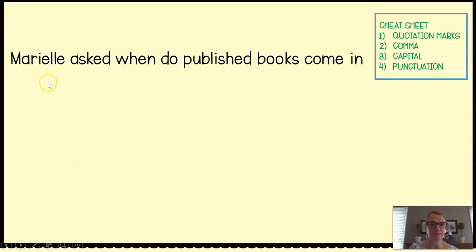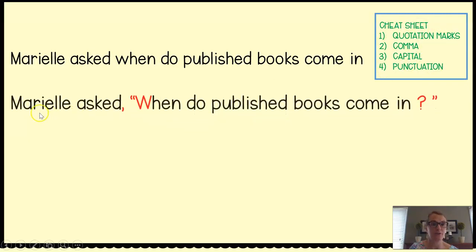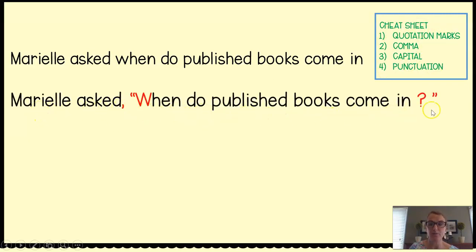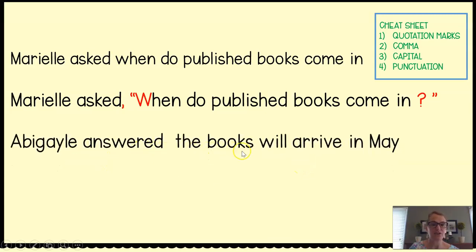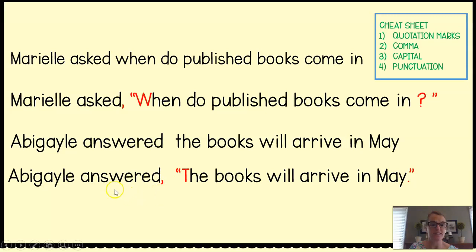A few more examples: 'Mariel asked, when do published books come in?' Corrected: 'Mariel asked, When do published books come in?' She has her quotation marks, her capital, her ending punctuation — a question mark because she's asking a question — and her comma. Another example: 'Abigail answered, the books will arrive in May.' Abigail needs a comma, quotation marks, a capital, and punctuation. Corrected: 'Abigail answered, The books will arrive in May.' She has her comma, a capital T, quotation marks around her exact words, and a period.